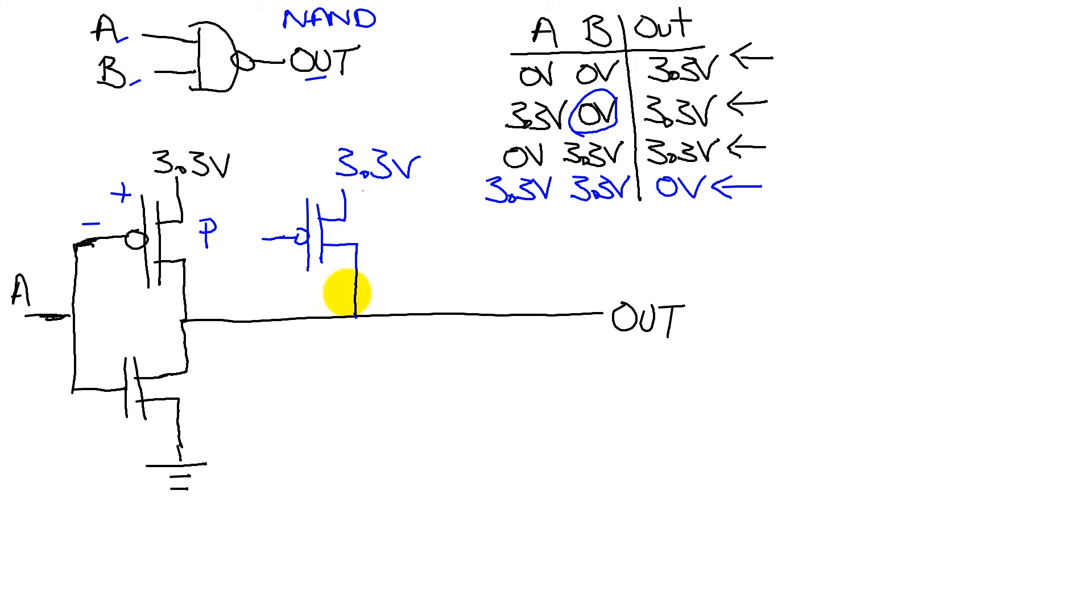Tie this output there and connect my B signal to the gate here. Now we see that if B is low, then this one is on, and the output is 3.3 volts.